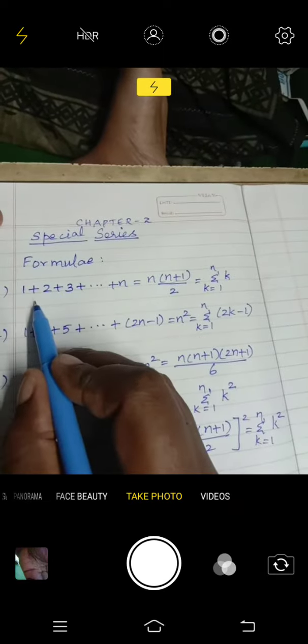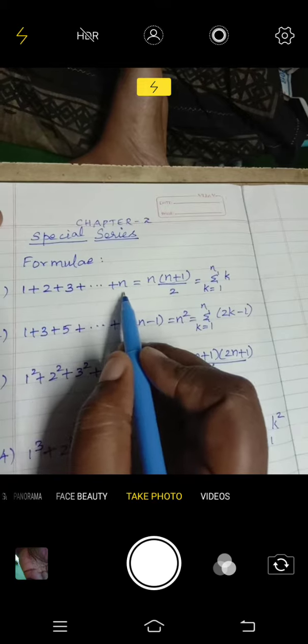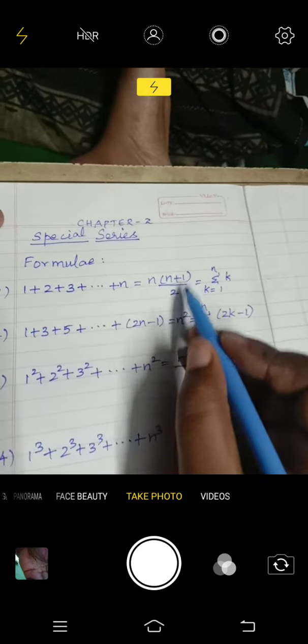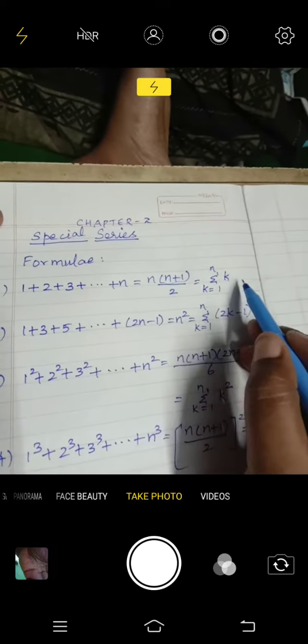The first formula is sum of natural numbers: 1 plus 2 plus 3 plus etc. plus n. The formula is n into n plus 1 by 2. This can be represented as summation k equal to 1 to n, k.